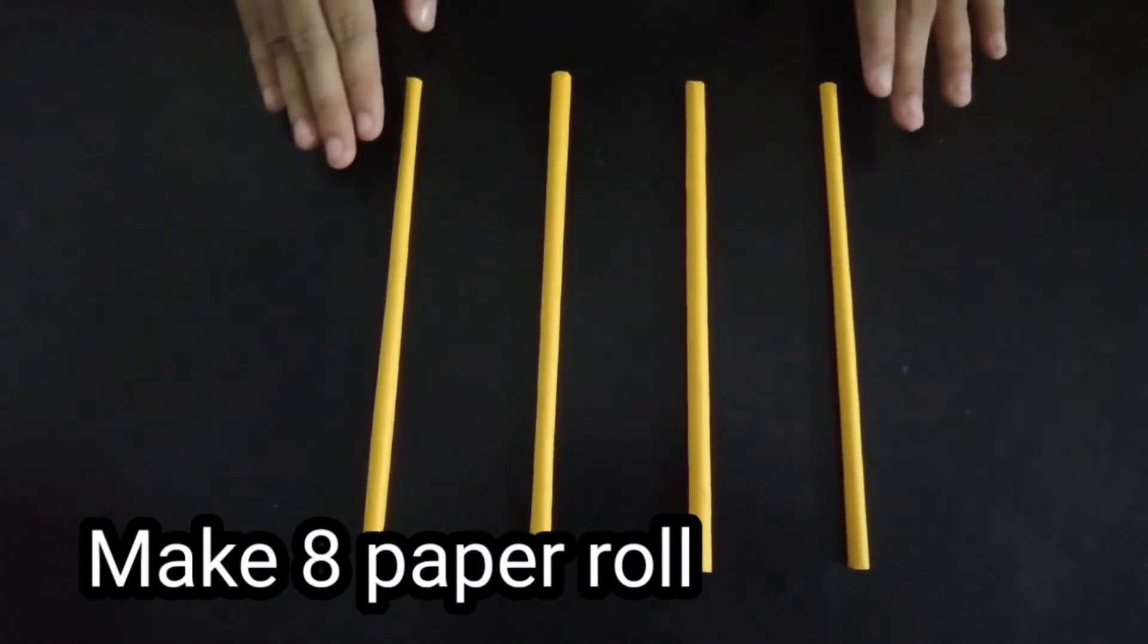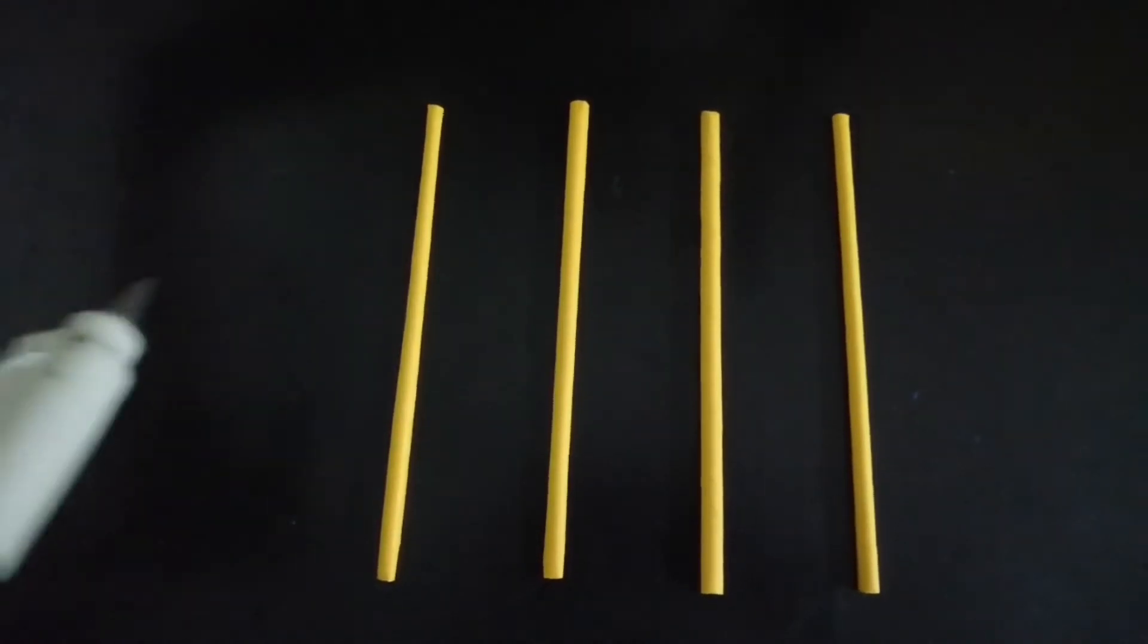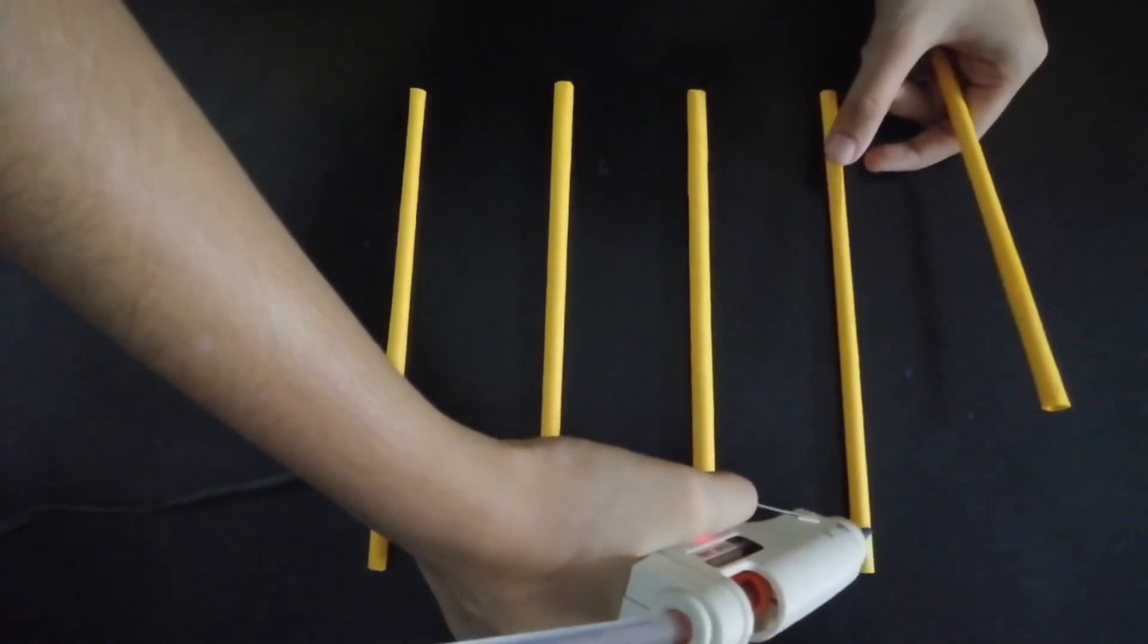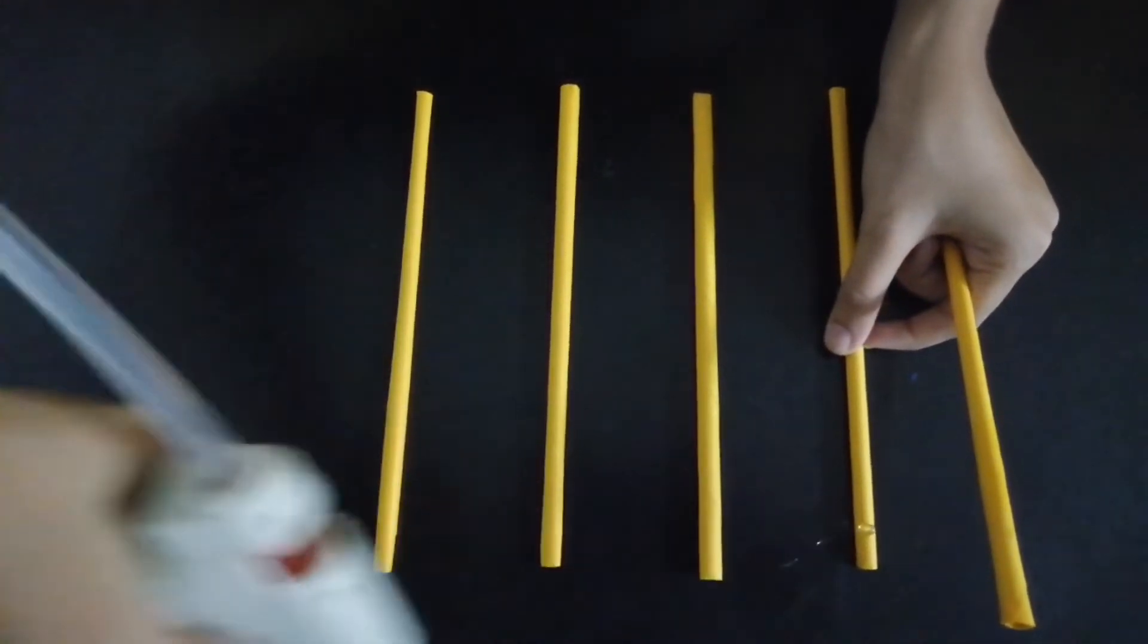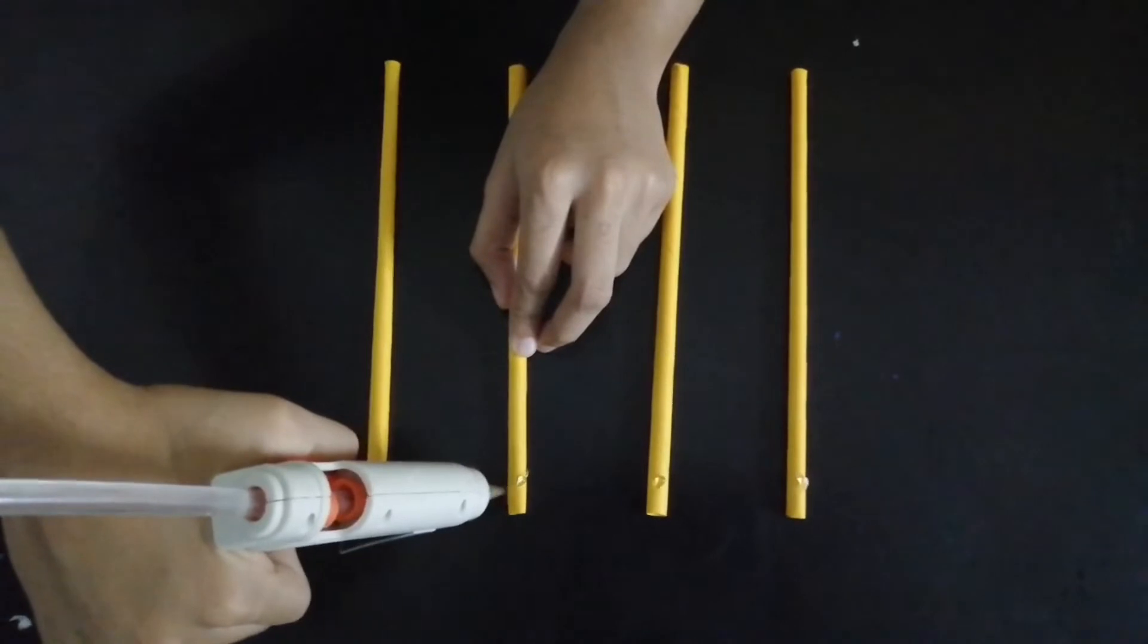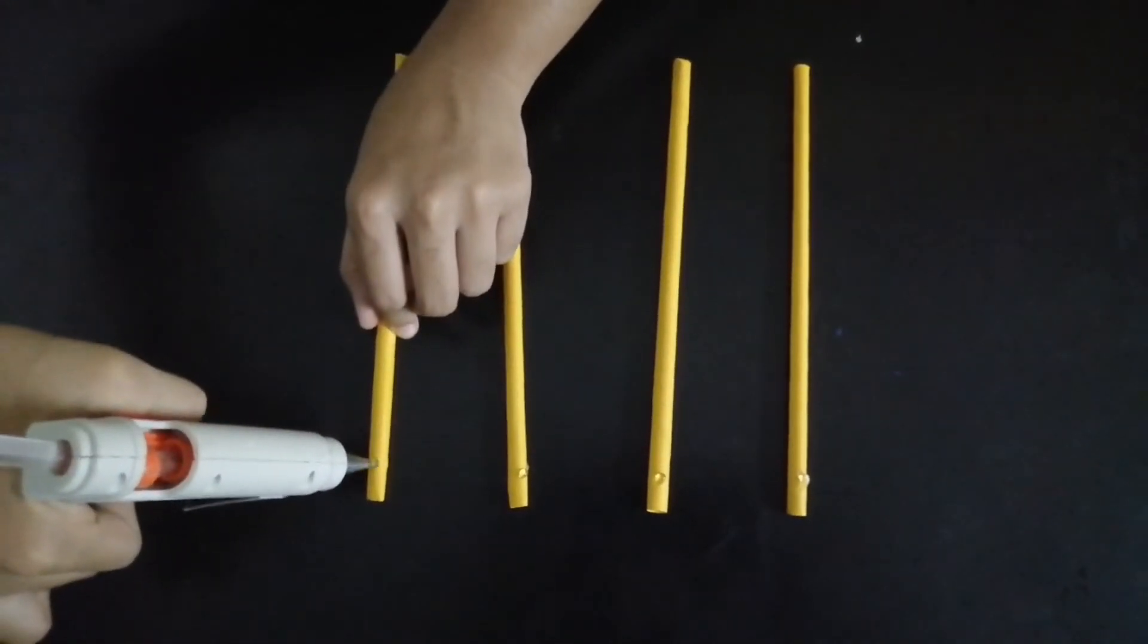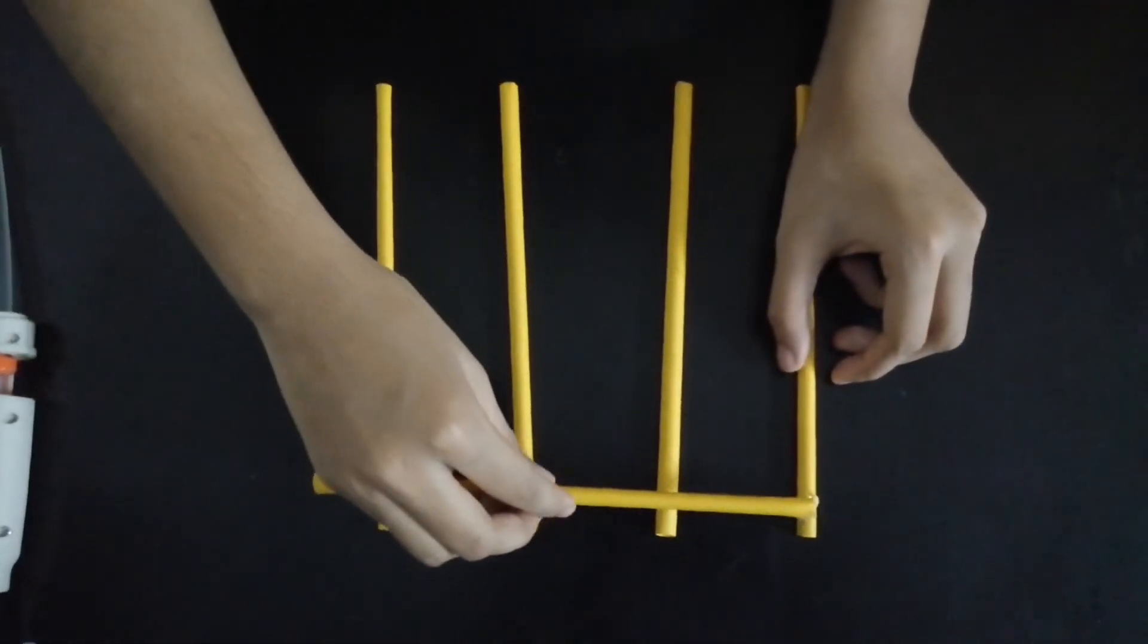Next step, keep the paper rolls like this. Then take one paper roll and hot glue and stick them together. It's not necessary to use hot glue; we can use normal glue also. Now we have to paste it.